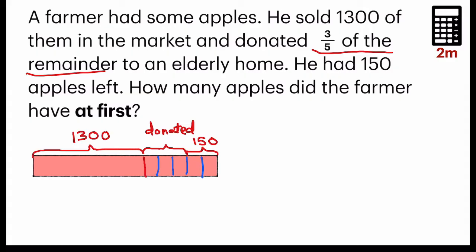And the question they want to find out all the apples that the farmer have at first, which is the entire chunk of the model. So the first part, looking at the model, I know that this two units is equals to 150.